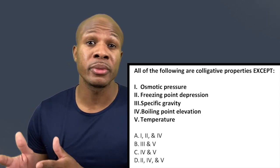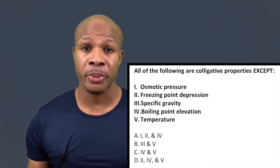Osmosis is the movement of water from an area of low concentration to an area of higher concentration. If you have pure water on one side and salted water on the other side, separated by a membrane, water is going to move from the pure water side to the salted side because it wants to balance the concentration of the two compartments. That's known as osmosis.